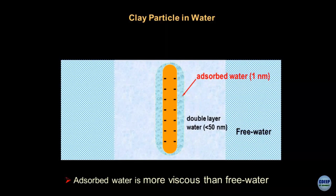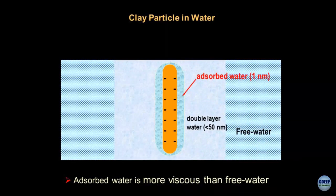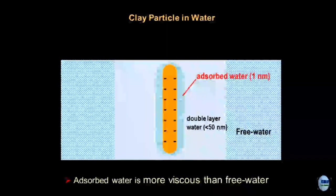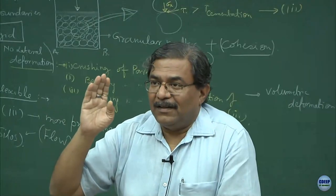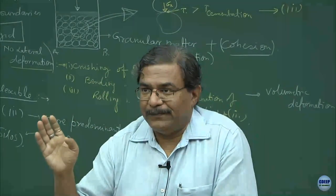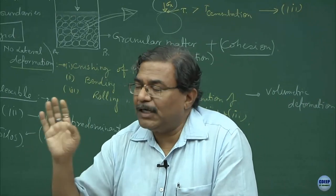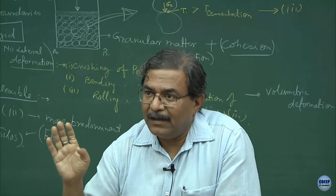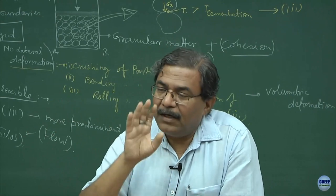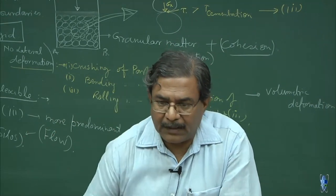The clay particle is surrounded by an adsorbed water layer (approximately 1 nanometer), then a double layer of water rich in cations, and the whole unit is surrounded by free water. When we go into the micro details of permeability, we will discuss why clays are less permeable than sands. By virtue of their mineralogy, clay particles create an adsorbed layer of water, and when two particles develop this layer, the pore space becomes so small that no fluid can migrate through it. This cannot happen in sands because sands are surface dormant — they are not surface active and there are no charges on them.